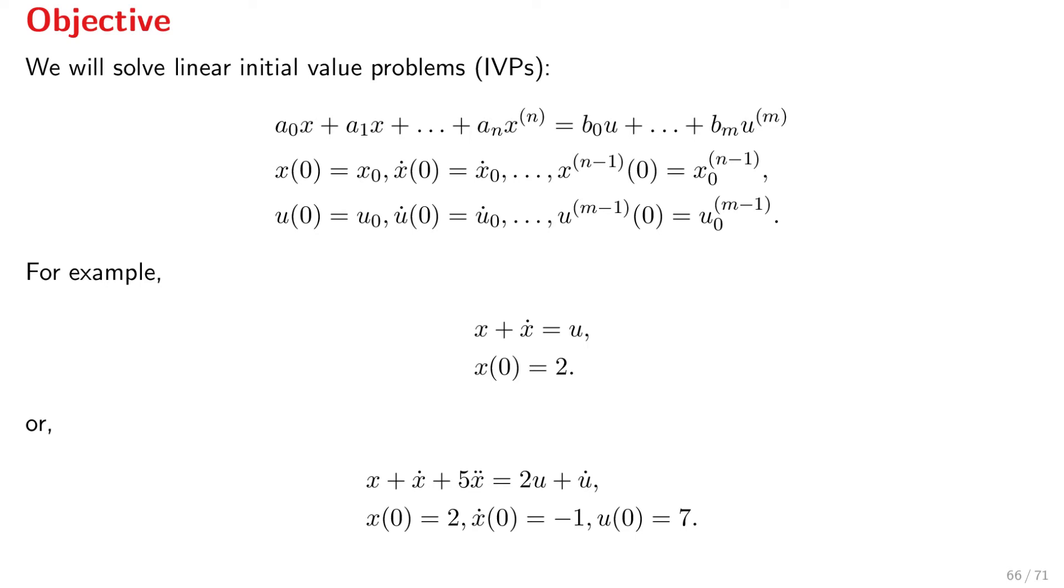This is the general formulation of an initial value problem, but let's have a look at a few simpler and more concise examples. We may have that x plus x dot is equal to u, given that x at time 0 is equal to 2. This is an initial value problem, and the question is, what is a function x of t that satisfies these conditions? Or we can have x plus x dot plus 5x double dot is equal to 2 times u plus u dot with these given initial conditions on x, on x dot and on u.